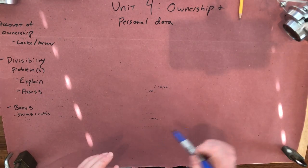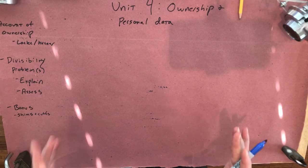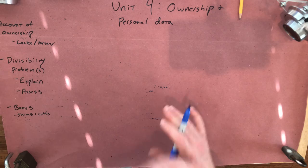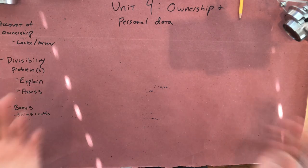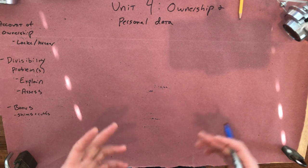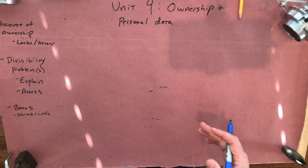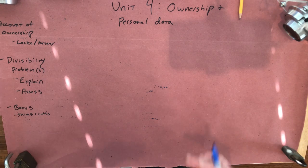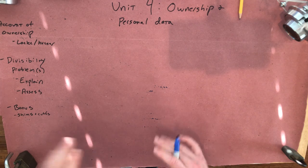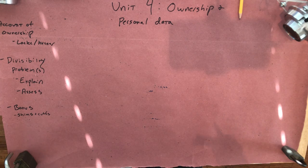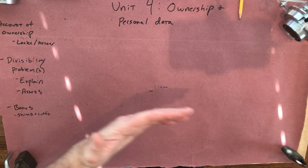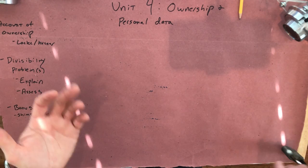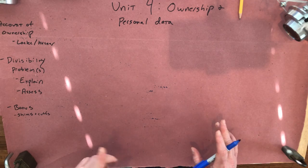All right so first off the essay prompt, which I of course don't have in front of me, but it says something like set out the best argument for a company, Juli is my imaginary company, set out the best argument that Juli has a right to profit from the things that they learn by doing a bunch of analytics on customers or users' personal data. So that's the first part.